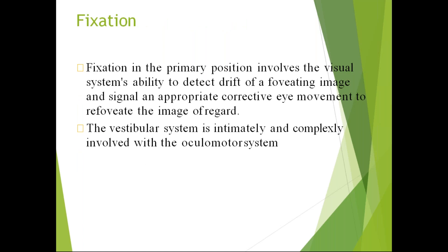Fixation means keeping the eyes in the primary gaze. Fixation in the primary position involves the visual system's ability to detect a drift of a foveating image and signal an appropriate corrective eye movement to re-foveate the image. To see an object, you fix the eyeball, the image falls on the fovea, and the fovea sends signals to the brain. The vestibular system is also intimately involved in this process.